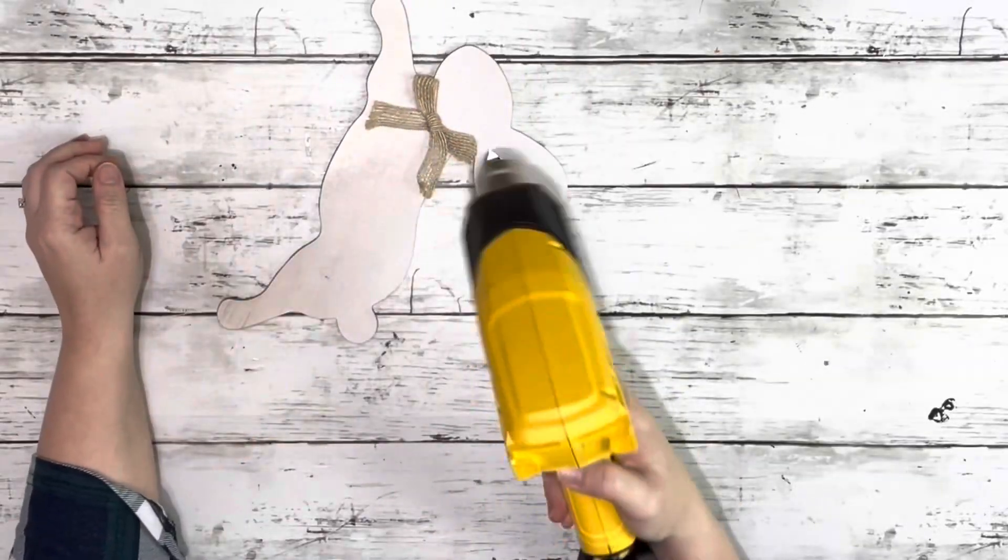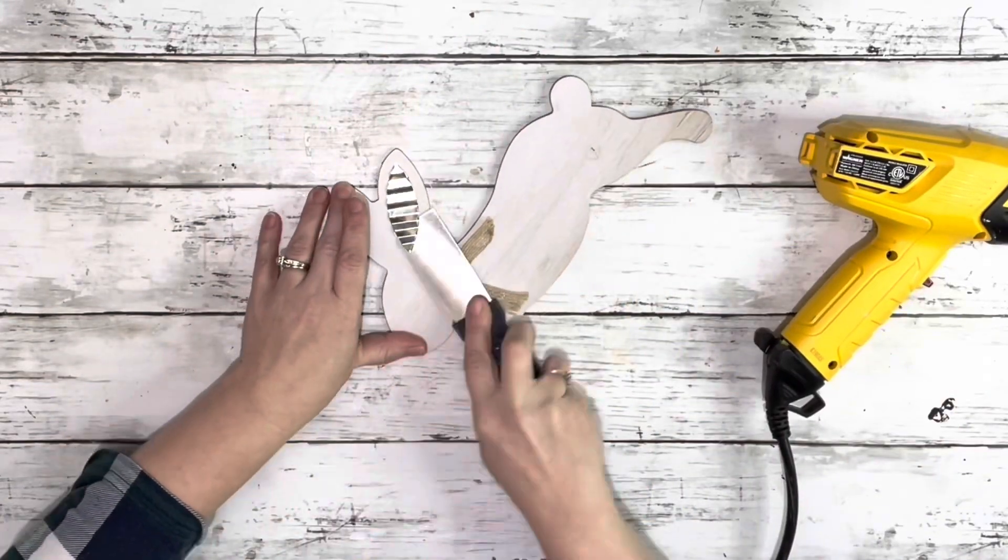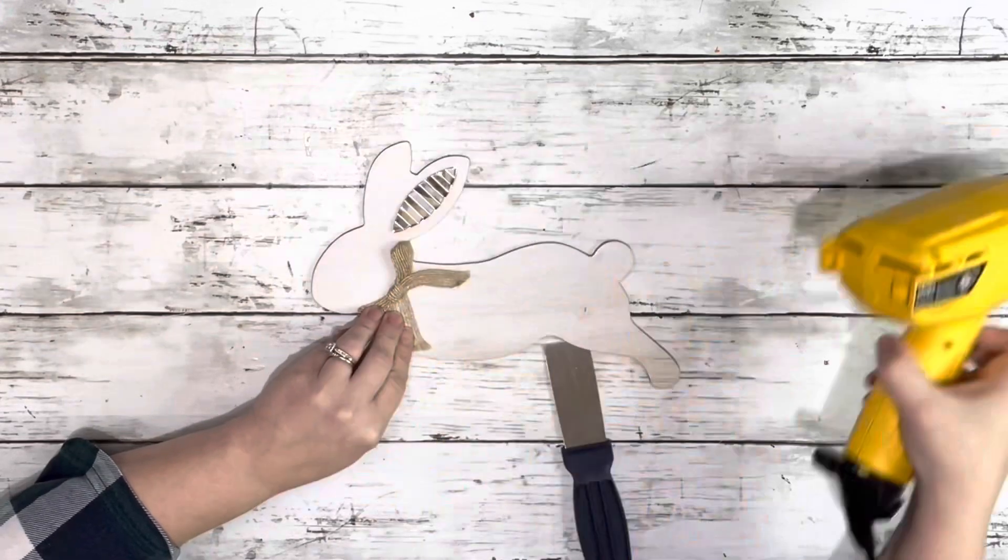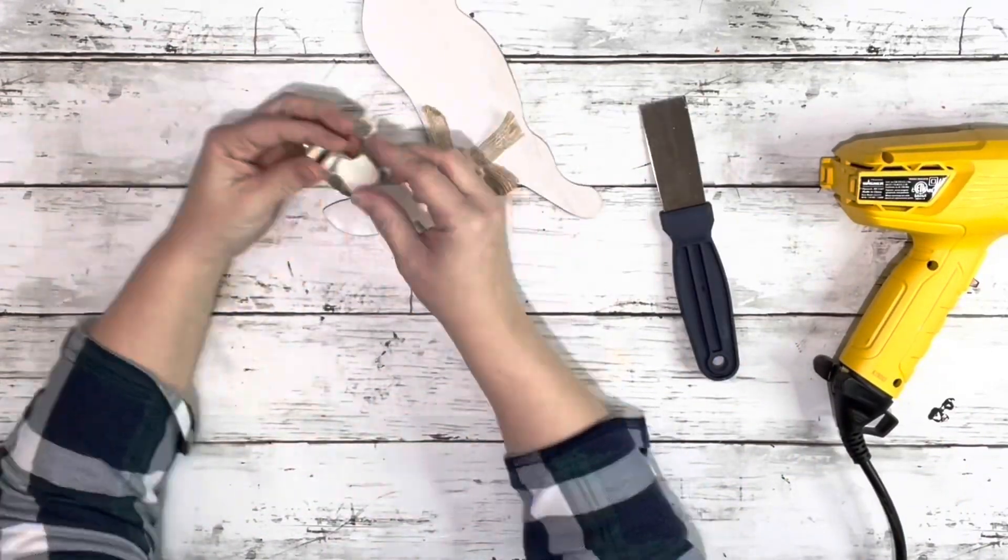I had to take off that little metal piece on the ear and the little bow, so I just heated up the glue from it with my heating tool and used a putty knife to remove that. Then I pulled off the little bow and scraped off any excess glue that was on there.